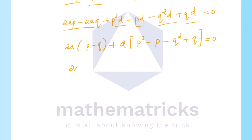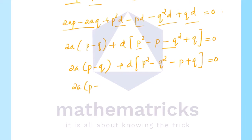That is: 2a into (p - q) plus d into (p² - q²) minus (p - q) equals 0. Since p² - q² = (p+q)(p-q), we factor out (p - q): (p - q) into [2a + d(p + q - 1)] equals 0.